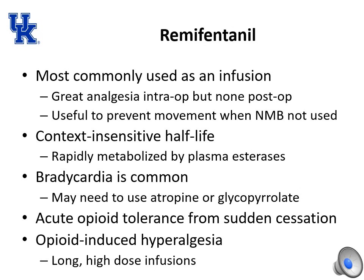Remifentanil is most commonly used as an infusion; it provides great analgesia intraoperatively but essentially none postoperatively. It is also useful to prevent movement when a neuromuscular blocker is not used. It has a very short context-sensitive half-life — sometimes called context-insensitive — because it is rapidly metabolized by plasma esterases. It can cause bradycardia, which can be offset with glycopyrrolate. Acute opioid tolerance from sudden cessation and opioid-induced hyperalgesia can develop, typically from long, high-dose infusions.